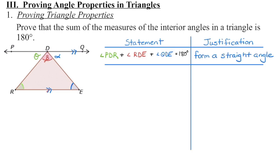I labeled each of these angles using a Greek letter and color-coordinated them so it's easier to see what's happening. Angle PDR is this angle in green. Angle RDE is this angle in red. And angle QDE is this angle in blue. Together, these three angles form our 180 degree straight angle. Going back to what we're trying to prove — we need to show that the interior angles add up to 180 — and of these three angles, only the one in red happens to be inside the triangle.